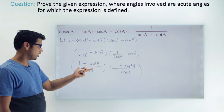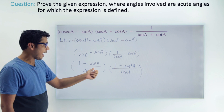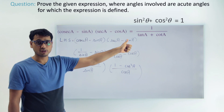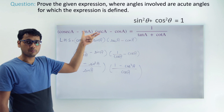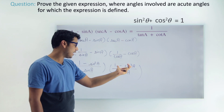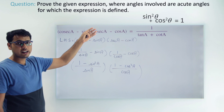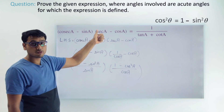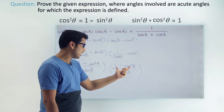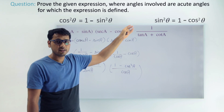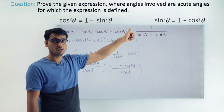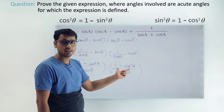Now look at the two numerators: 1 minus sin squared a and 1 minus cos squared a — and think of our first identity: sin squared θ plus cos squared θ equals 1. If we rearrange, cos squared θ equals 1 minus sin squared θ, and sin squared θ equals 1 minus cos squared θ.